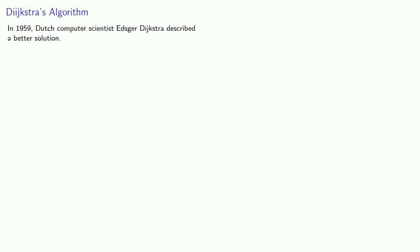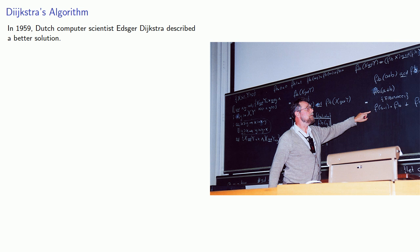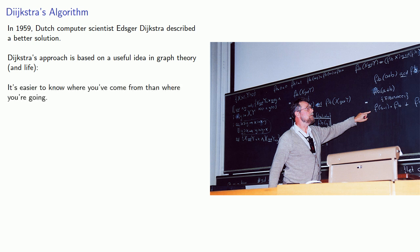In 1959, Dutch computer scientist Edsger Dijkstra described a better solution. Dijkstra's approach is based on a useful idea in graph theory and life: it's easier to know where you've come from than where you're going.